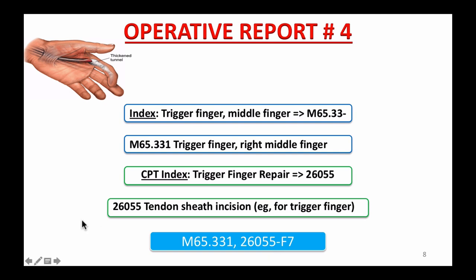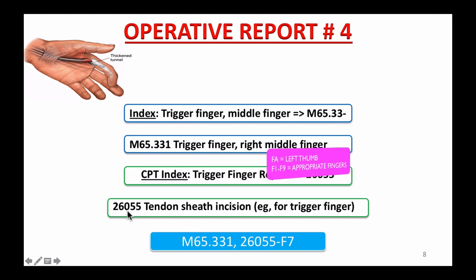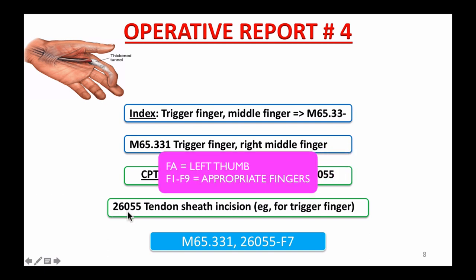The key takeaway from this case is that CPT has only one code for trigger finger release: 26055. So you don't need to spend too much time digging deep into the op report. However, a patient can have more than one trigger finger, and if that is the case, you use the same code 26055 with appropriate modifiers F1 through F9 for each finger accordingly.